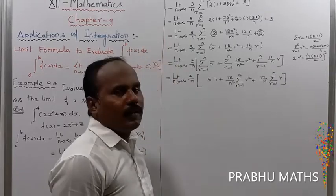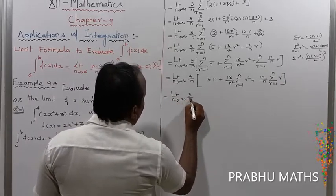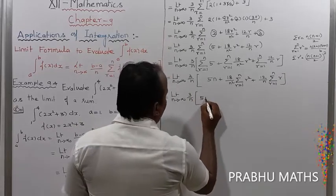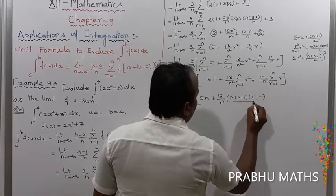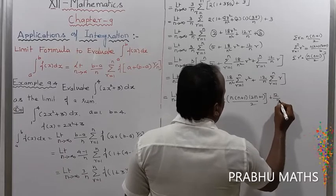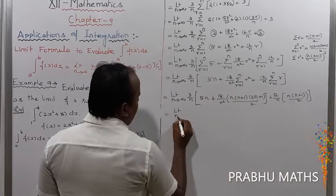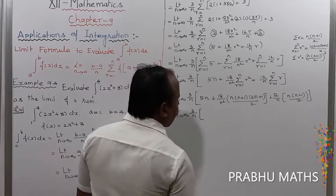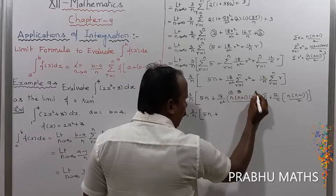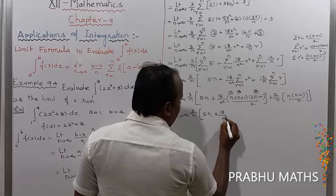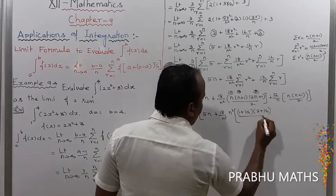Substituting the summation formulas: limit n tends to infinity of 3 by n into [5n + (18/n²)·n(n+1)(2n+1)/6 + (12/n)·n(n+1)/2]. Simplifying, the n values cancel, giving terms with (1 + 1/n) and (2 + 1/n) divided by appropriate denominators.